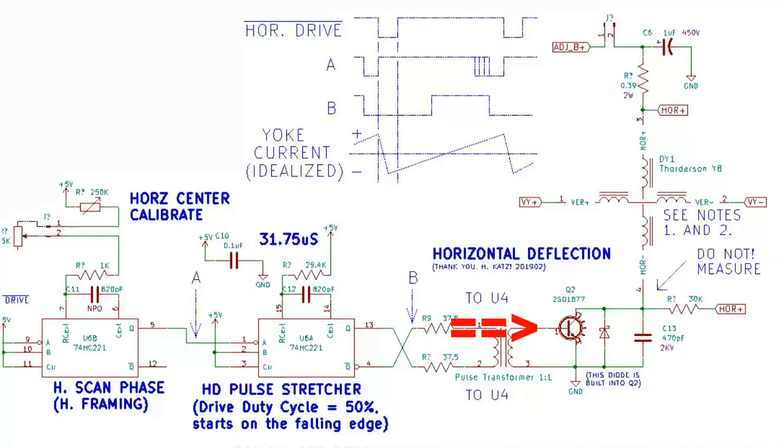Q2 is the horizontal deflection transistor. It is driven by a pulse that is transformer coupled from a monostable multivibrator set to take the horizontal drive signal and produce a 50/50 square wave with a duration of 31.75 microseconds per high period and the same for the low period.